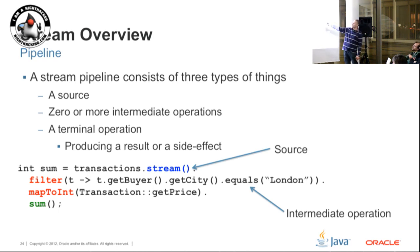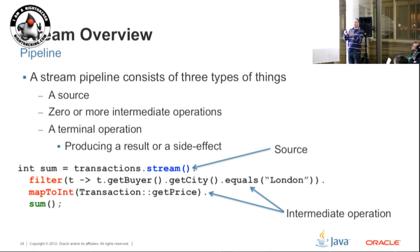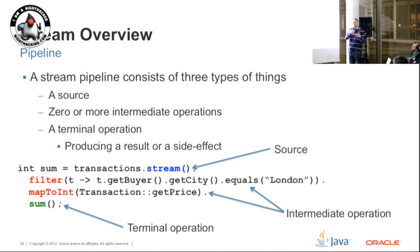So we get a stream on the output which is potentially smaller than the input stream. Then we use 'mapToInt' as another intermediate operation to convert the stream of transactions into a stream of integers representing the price. Then our terminal operation, which is a specialized reduce, is to sum those values together. Each element coming through the stream will be added and we get the result, which is the sum of all those transactions.